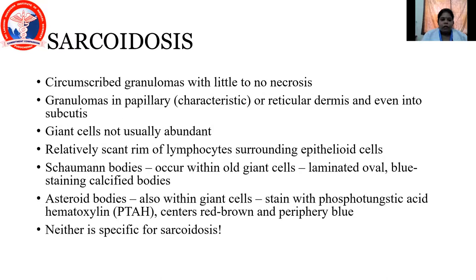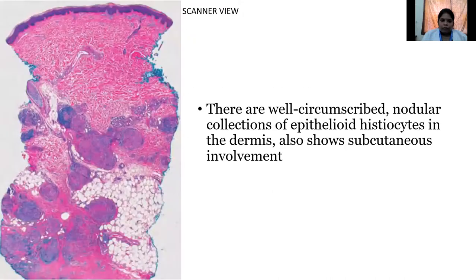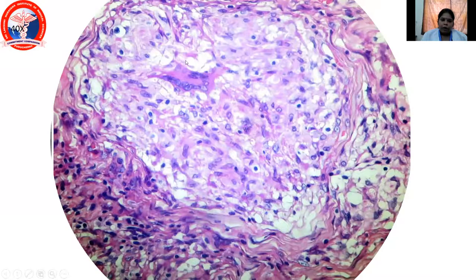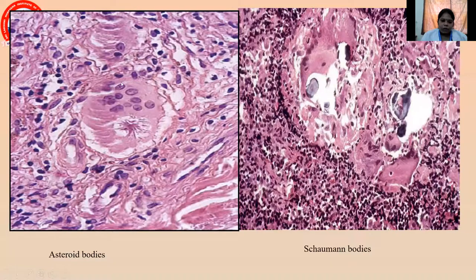Asteroid bodies also occur within the giant cells. They stain with phosphotungstic acid hematoxylin (PTAH), where the centers are red-brown and the periphery is blue. They are not specific for sarcoidosis. This is a histopathology microscopic view — a scanner view where you can see well-circumscribed nodules of collection of epithelioid cells in the dermis, also extending into the subcutaneous plane. A higher-power view shows giant cells and granulomas. This is a picture of an asteroid body situated inside a giant cell. These are Schaumann bodies situated inside the giant cell.